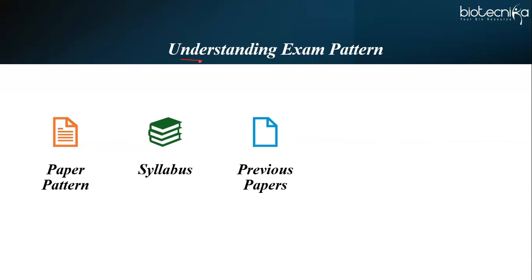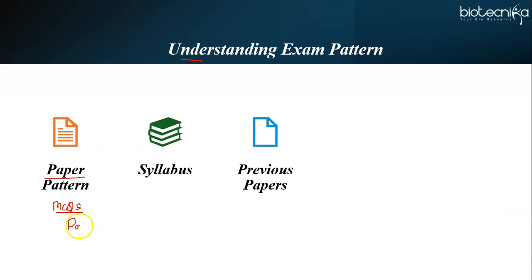Decoding CSIR Net Life Science papers requires a comprehensive understanding of the exam pattern, syllabus, question pattern, and solution techniques. The CSIR Net Life Science exam paper consists of multiple choice questions and is divided into three sections. Part A consists of general aptitude based questions. Part B consists of fact-based or memory-based questions, and Part C consists of analytical and conceptual questions.